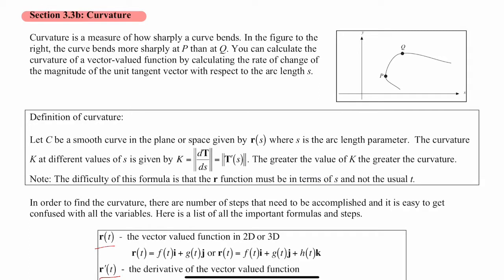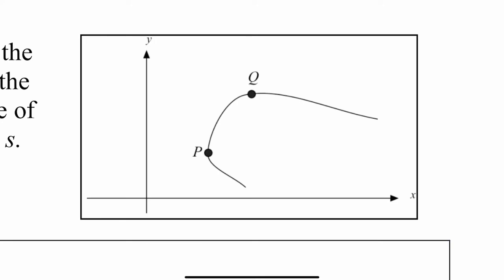Curvature is a measure of how sharply a curve bends. In this figure here, we have two different points, point P and point Q. Which point would have the higher curvature?